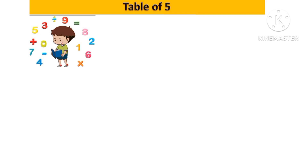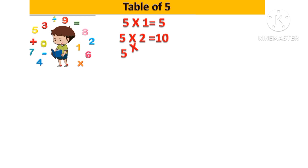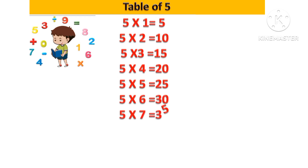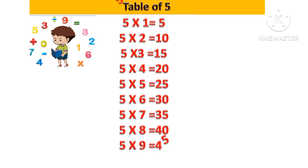Let's revise table of 5. 5 1s are 5, 5 2s are 10, 5 3s are 15, 5 4s are 20, 5 5s are 25, 5 6s are 30, 5 7s are 35, 5 8s are 40, 5 9s are 45, 5 10s are 50.